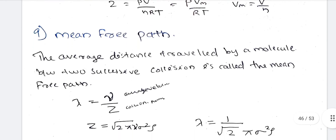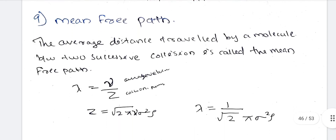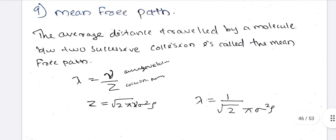The mean free path is defined as the average distance traveled by a molecule between two successive collisions. We will now discuss the collision properties, which fall under the 5-mark section of the syllabus.